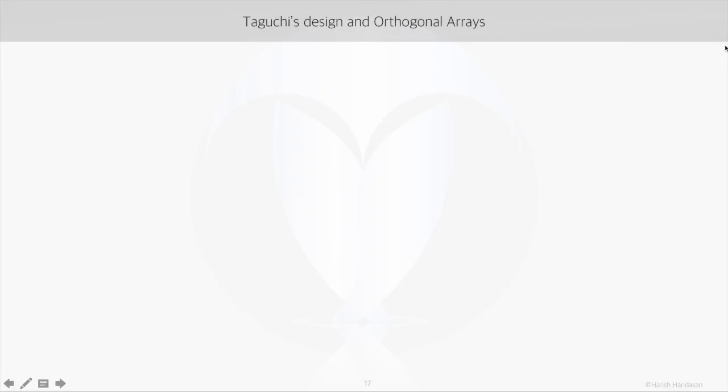Now if you have used design of experiments, you would know about the property called orthogonality. This property is key to Taguchi's designs. Taguchi's design uses something called orthogonal arrays which was introduced by C R Rao. It helps to reach the optimum levels with minimum trials at minimum cost.